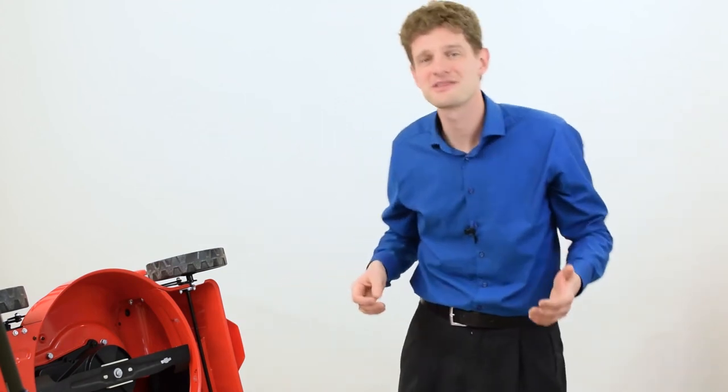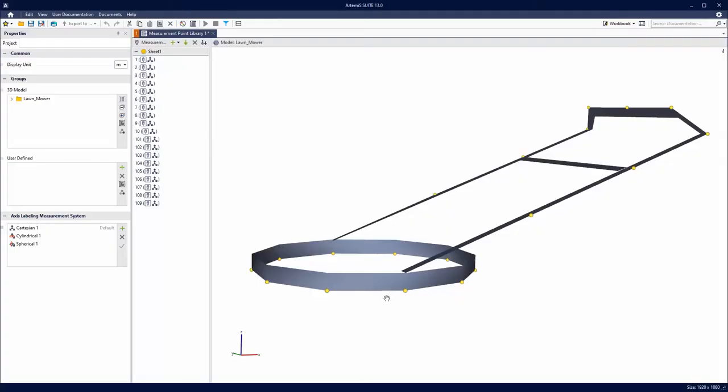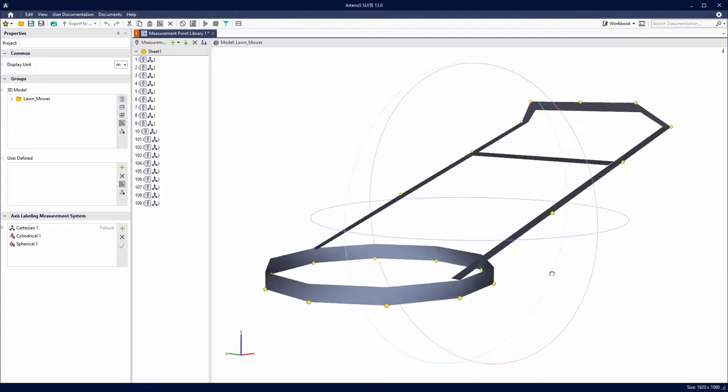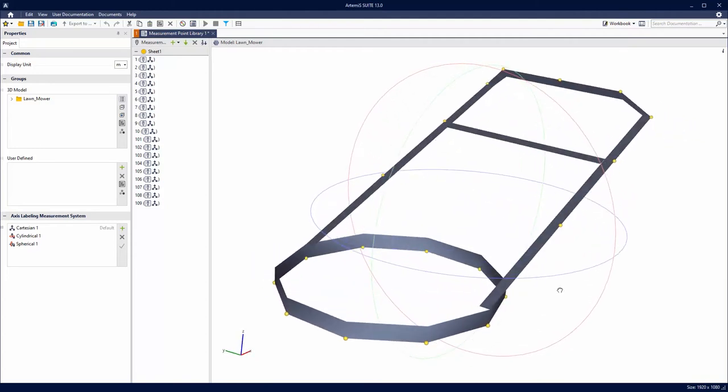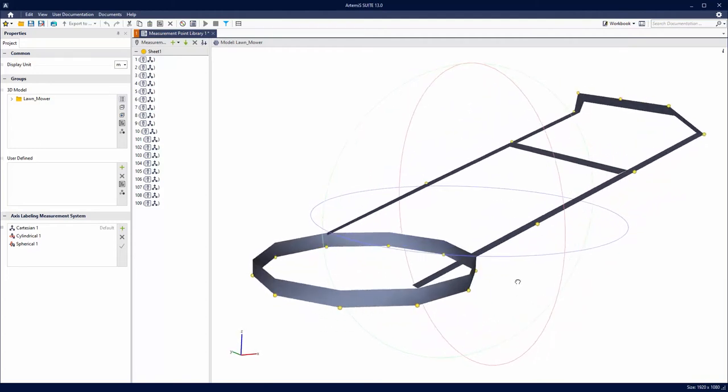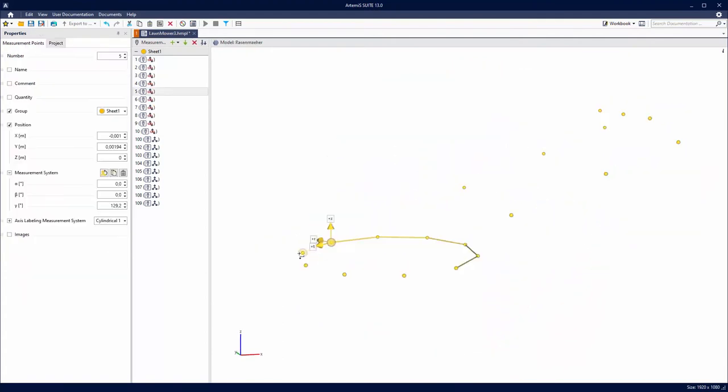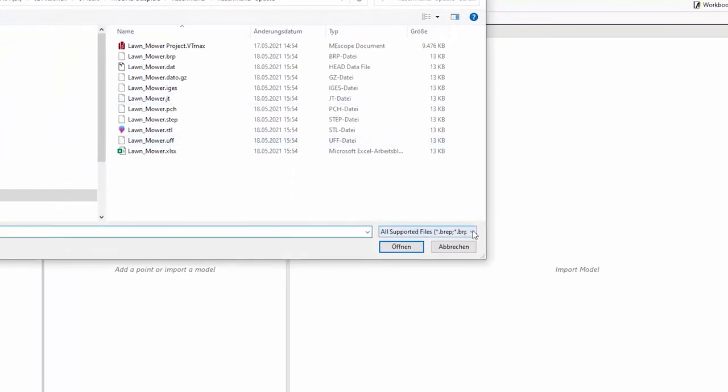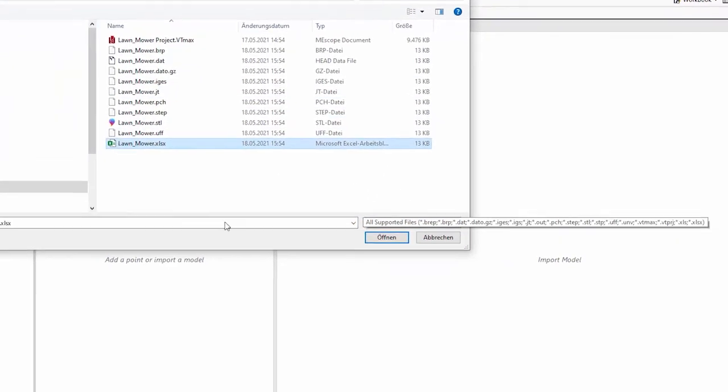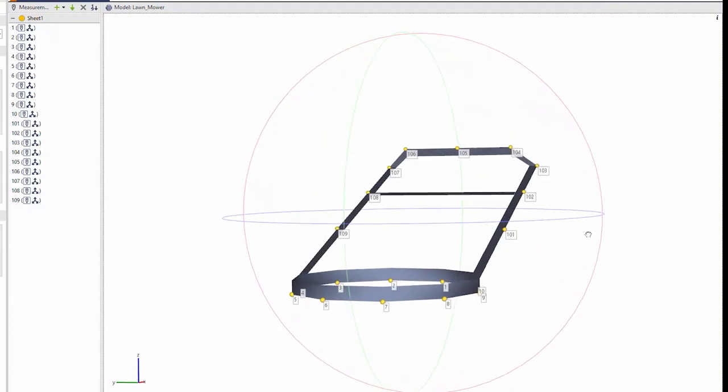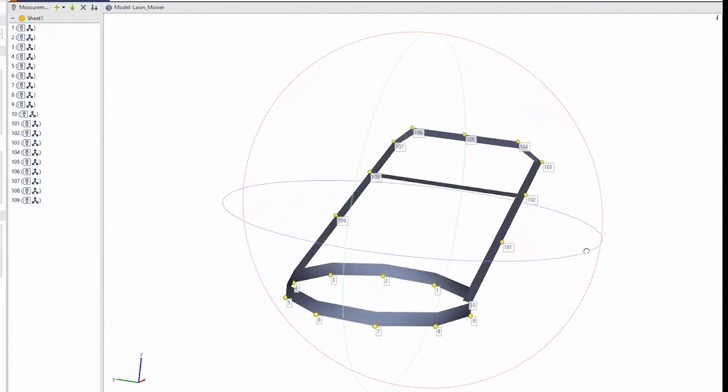So let's check out how these coordinate systems would look like in a model. I have created my model with ArtemiS Suite from HEAD Acoustics. This is an affordable program which is easy to use and allows different ways to create a model. So if you are a complete beginner, starting from scratch, or you already have professional CAD data, here you can set up your model as you like. This will be your base for your data acquisition and the modal analysis.